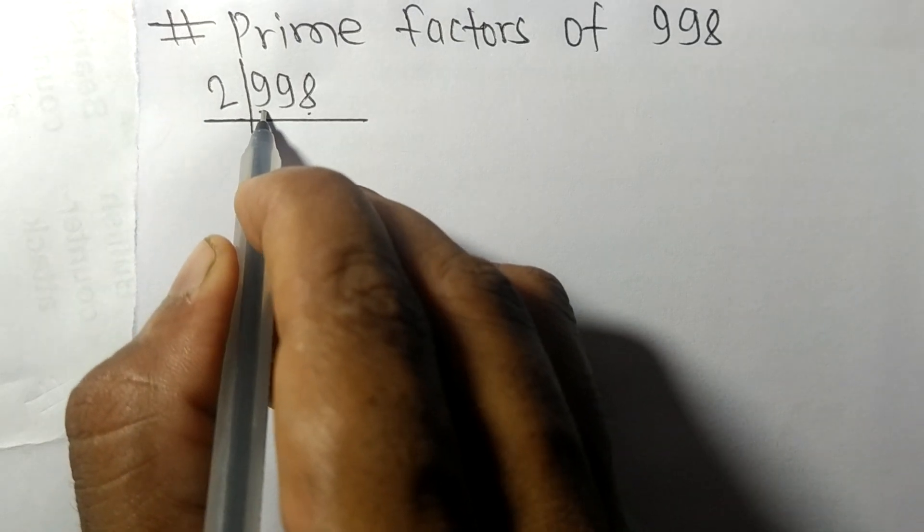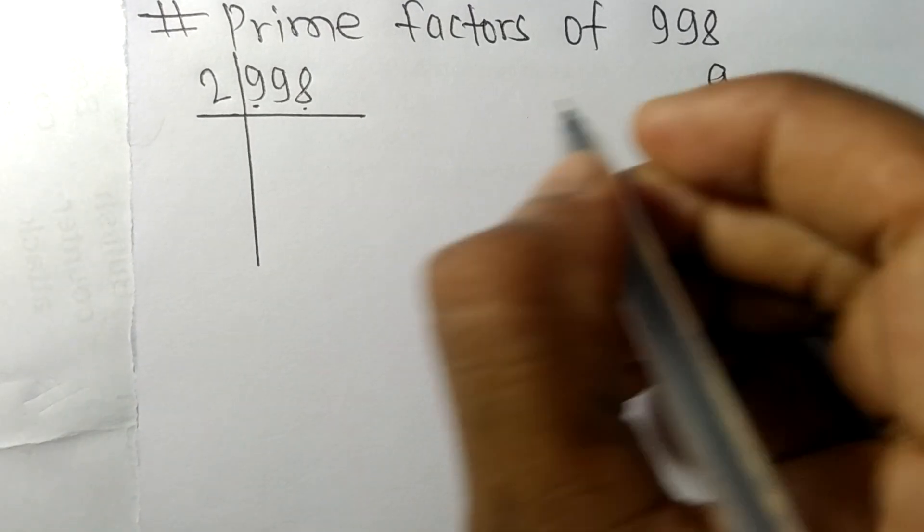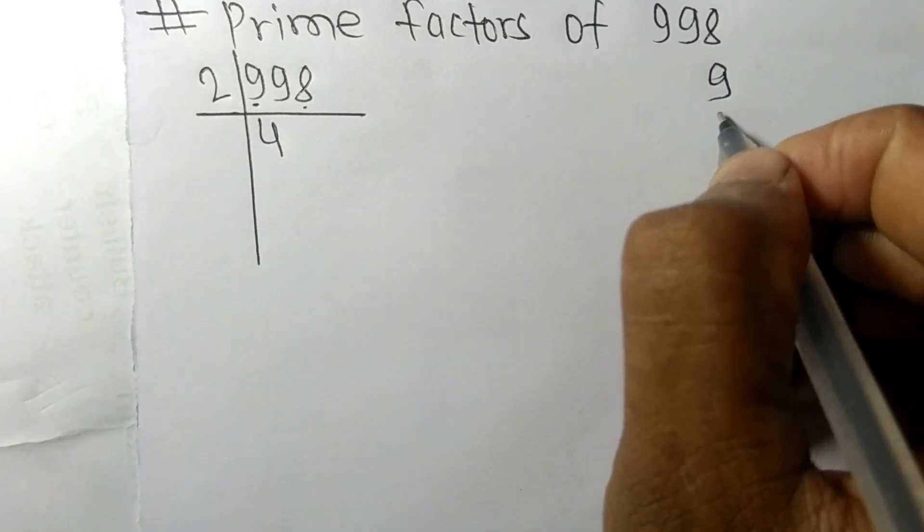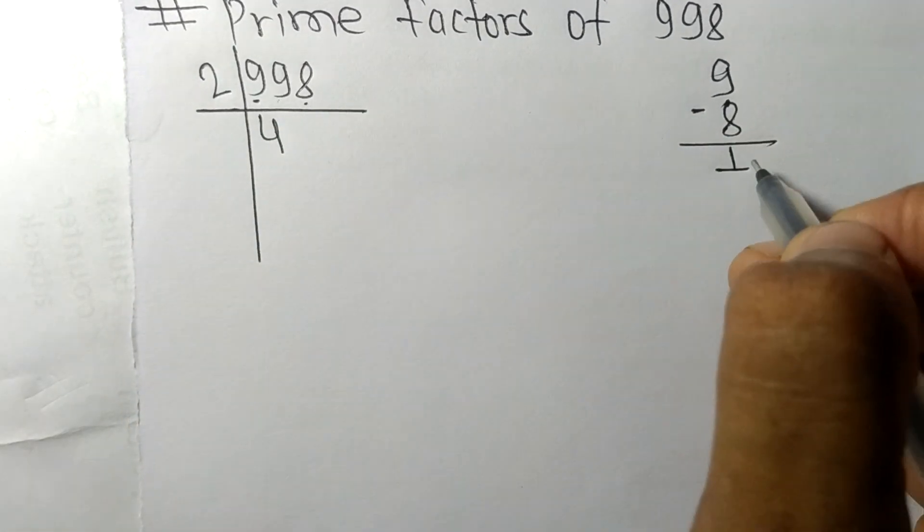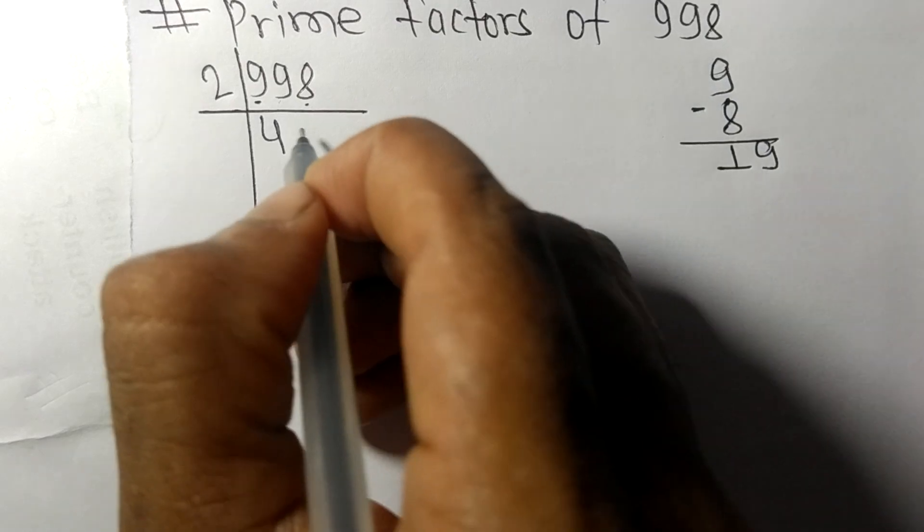First we have 9, so 2 times 4 is 8. On subtracting, we get 1. Bring down the 9 to make 19. Two times 9 is 18.